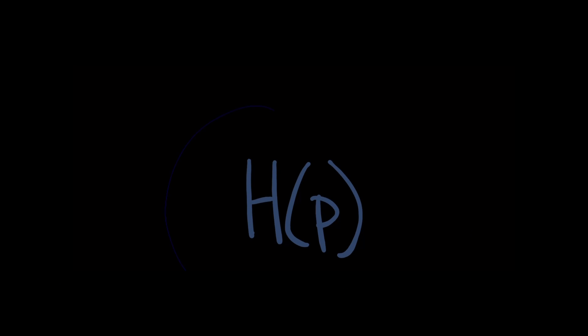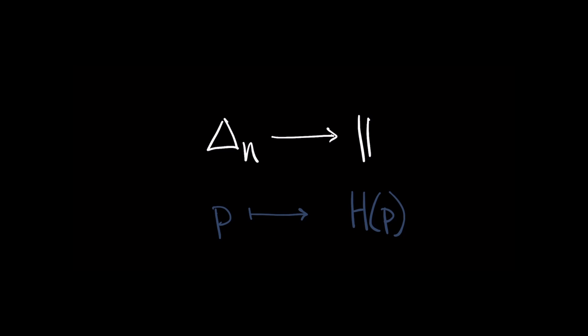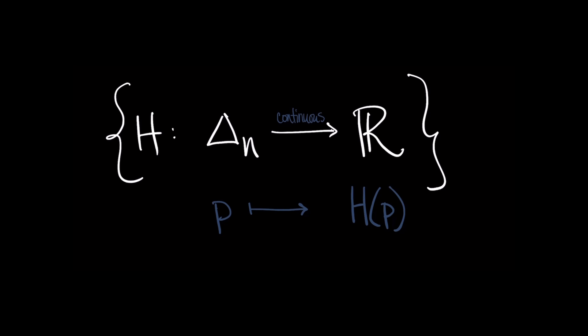This means that entropy is not just a number, it's a function. And it's not just one function, it's a collection of infinitely many functions. And even better, these functions are actually continuous, that is, they behave nicely in the eyes of topology.